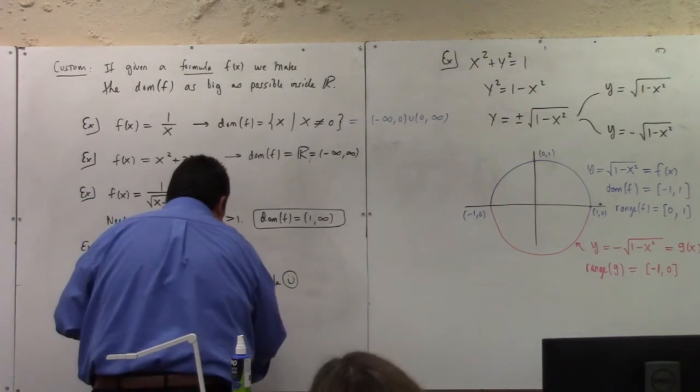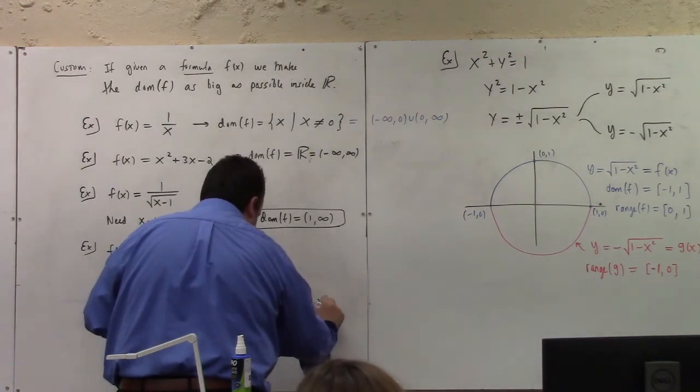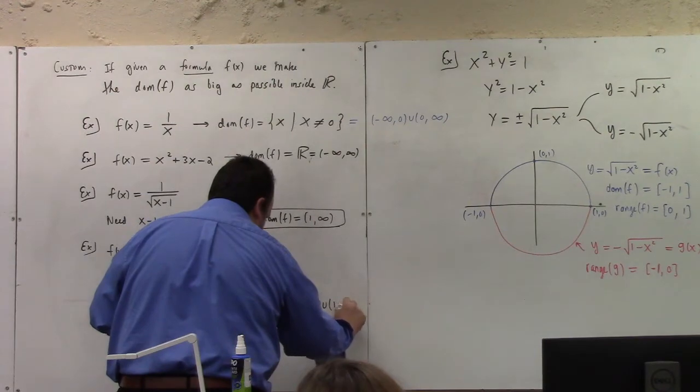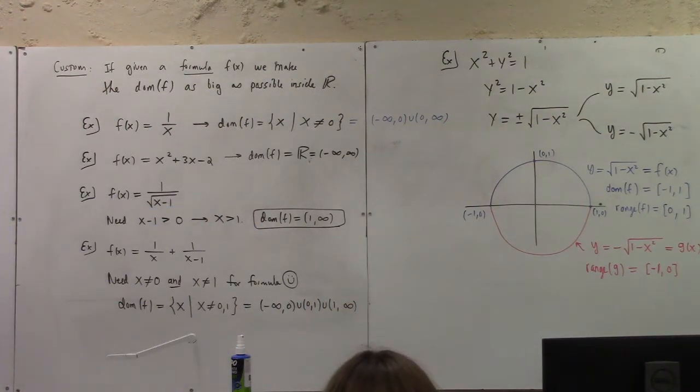So we'd say x such that x is not equal to 0 or 1. In terms of intervals, that's minus infinity to 0 union with 0 to 1 union with 1 to infinity again. And that would be the domain in interval notation because we have to exclude 0 and 1. It forces us to write three intervals.